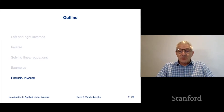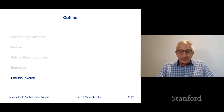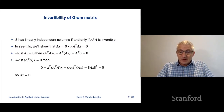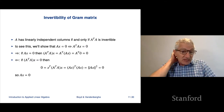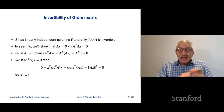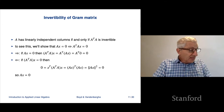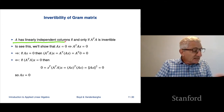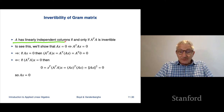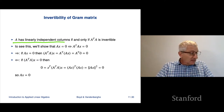Our last topic in this chapter is the pseudo-inverse of a matrix. We're going to start with a connection between the Gram matrix and the matrix itself. If you have a matrix A, it has linearly independent columns if and only if its Gram matrix is invertible.